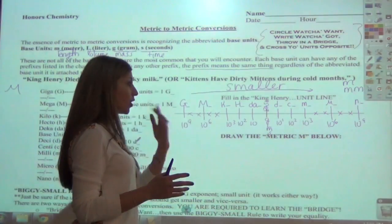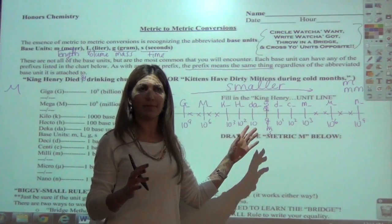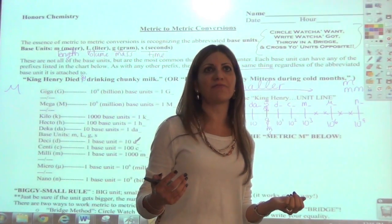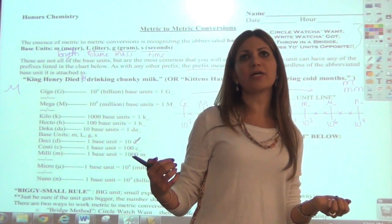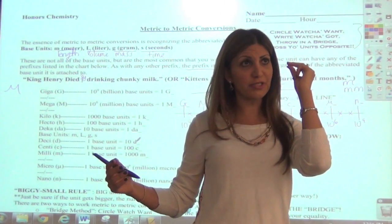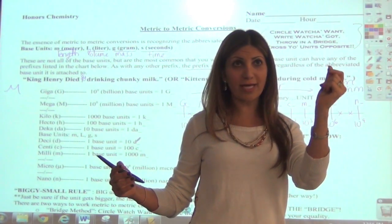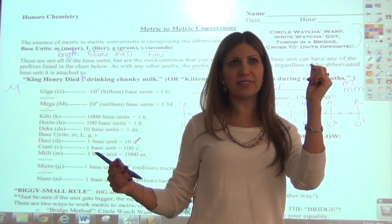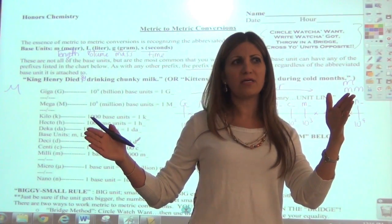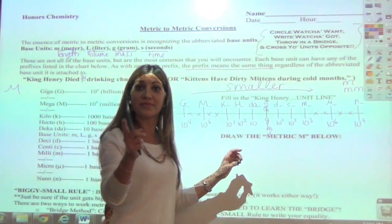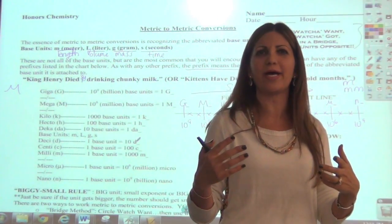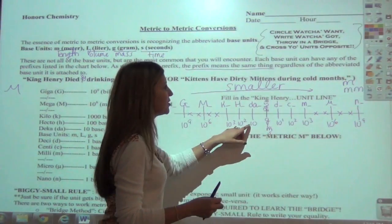Once you know the exponents, conversions become fast. For example, converting from nanometers to kilometers: nano is at 10 to the ninth and kilo is at 10 to the third, so the difference in exponent is 9 plus 3 equals 12.